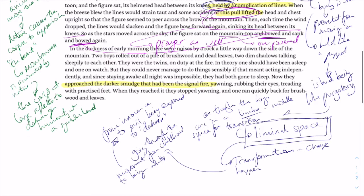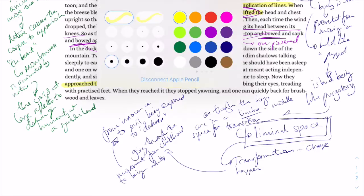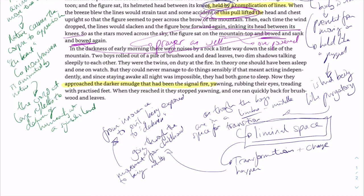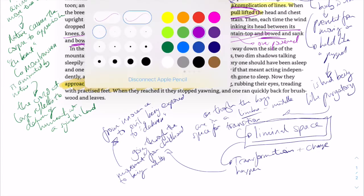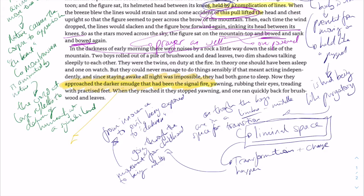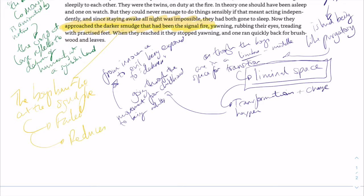Immediately after that, having established this sense of the island being a liminal space, an in-between space, we then have this critical image of the signal fire having been allowed to go out. The twins Sam and Eric have failed to keep the fire alight. So the boys let out the signal fire, they have failed. It reduces their chance of being saved and makes the disasters of the rest of the narrative seem inevitable.